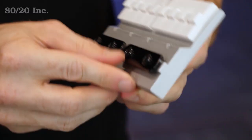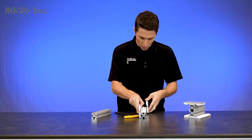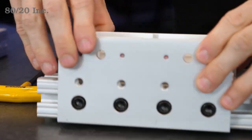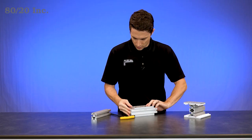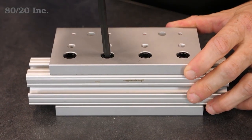You'll loosen up your preassembled T-nuts, just like that, and then just slide them into the open T-slot. We'll get those right where we want them, then we'll take our wrench and start tightening everything down.